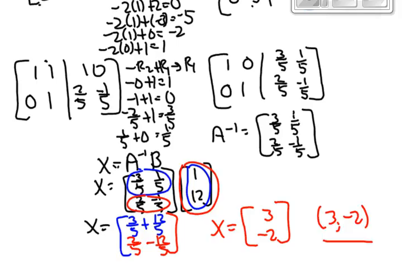That's very easy to check: 3 plus negative 2 is 1. 2 times 3 is 6, negative 3 times negative 2 is 6, and 6 plus 6 is 12. So this is a solution to the system. Now let's go to the next problem — I have a 3x3 system.